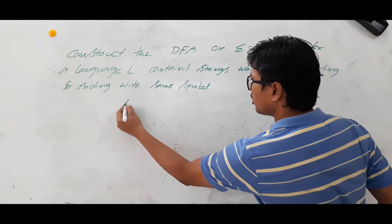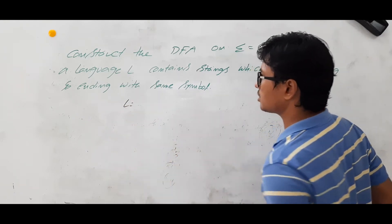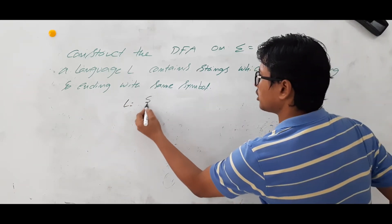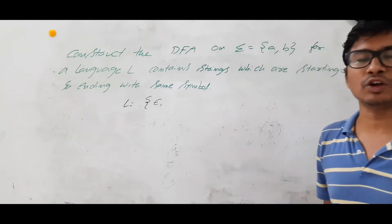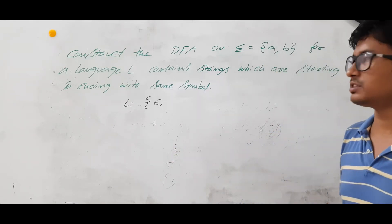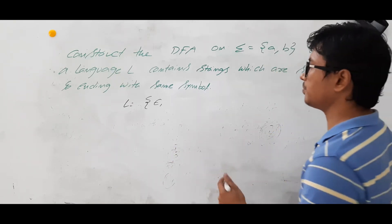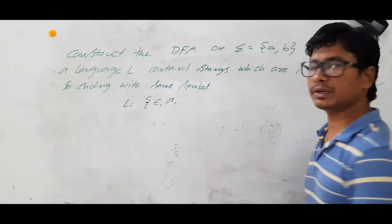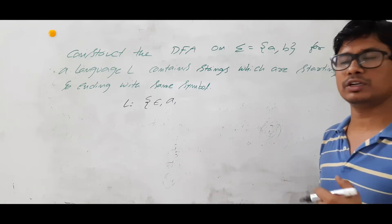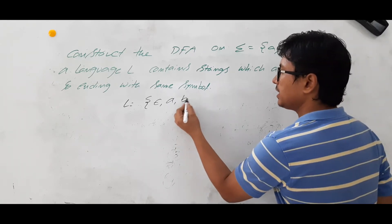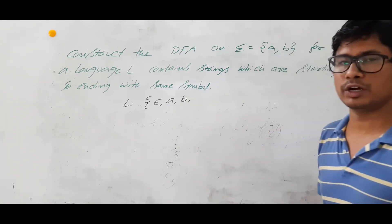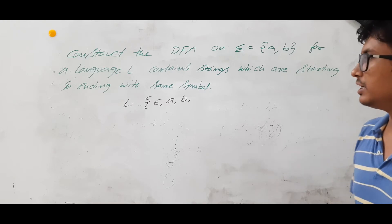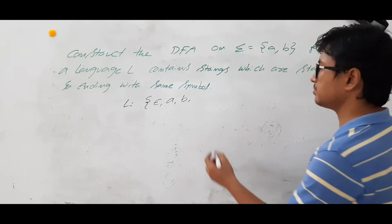What does the language L consist of? Language L consists of epsilon. Why? Because epsilon is starting and ending with the same symbol called epsilon. A will come because it is starting and ending with the same symbol. B can also join because it is also starting and ending with the same symbol.